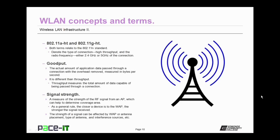Now let's talk about 802.11a-ht and 802.11g-ht. Both of these terms relate to the 802.11n standard. They denote the type of connection — a high throughput connection — and the radio frequency, which will either be the 2.4 GHz radio frequency band or a 5 GHz connection.